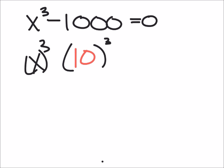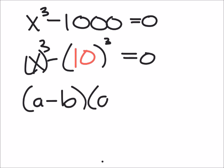So we really got x cubed minus 10 cubed equals zero. And then at this point we have the difference of cubes, which was a minus b times a squared plus ab plus b squared.